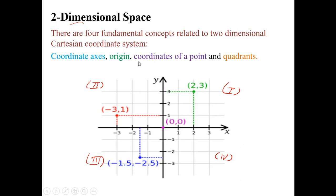The four concepts are: coordinate axis, origin, coordinates of a point, and quadrants. You are very familiar with these. The two number lines intersect to form the two-dimensional space — the horizontal line is the x-axis, the vertical line is the y-axis. Their point of intersection is called the origin. Coordinates of a point are two numbers giving the x and y distances from the origin.